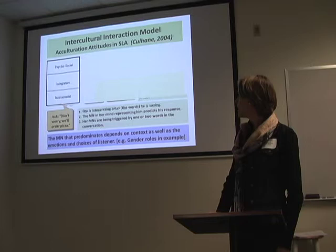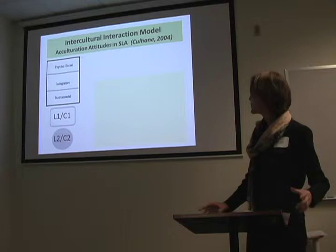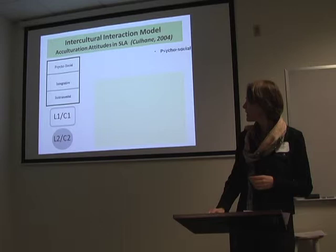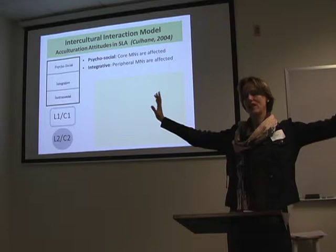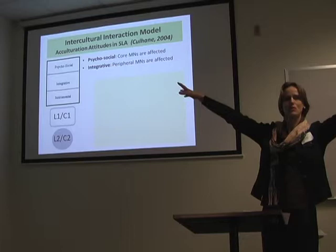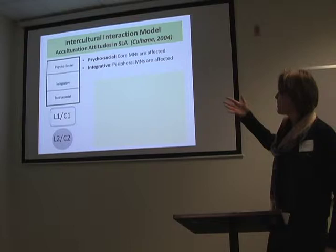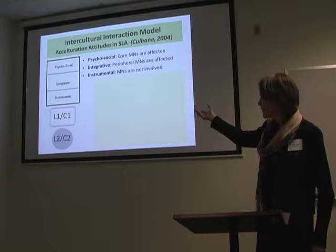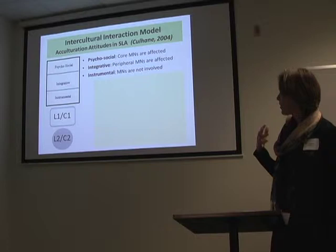When we go into the intercultural interaction model, this is Colhane, and he's got basically three levels. The psychosocial, which is core mental networks, and then you have mental networks that are at the periphery. So if you think of your core identity, and then periphery — what you do professionally, or for your hobbies — that's integrative. And then instrumental is where your networks are not involved. So you've got first language and culture, second language and culture, and these are the acculturation attitudes.